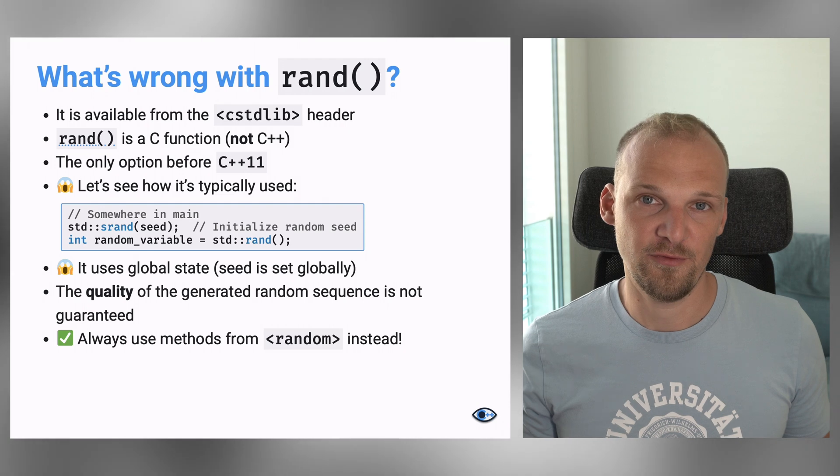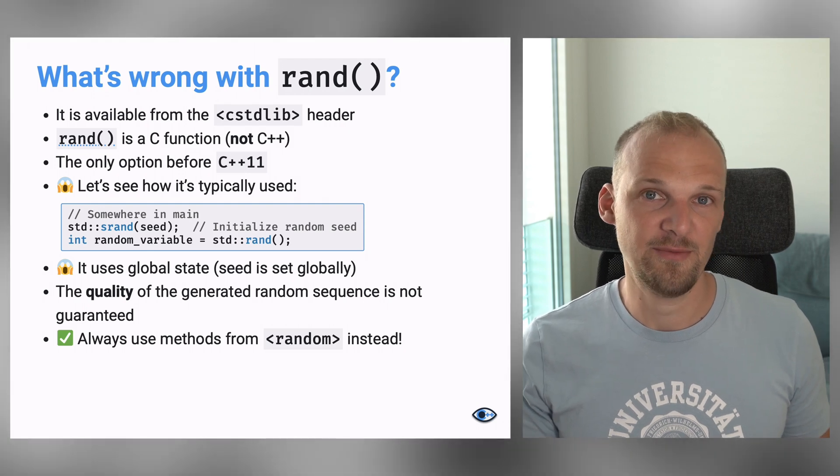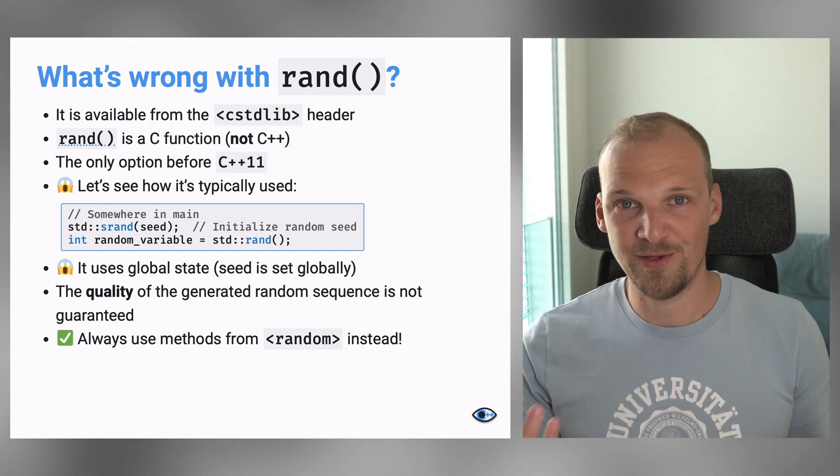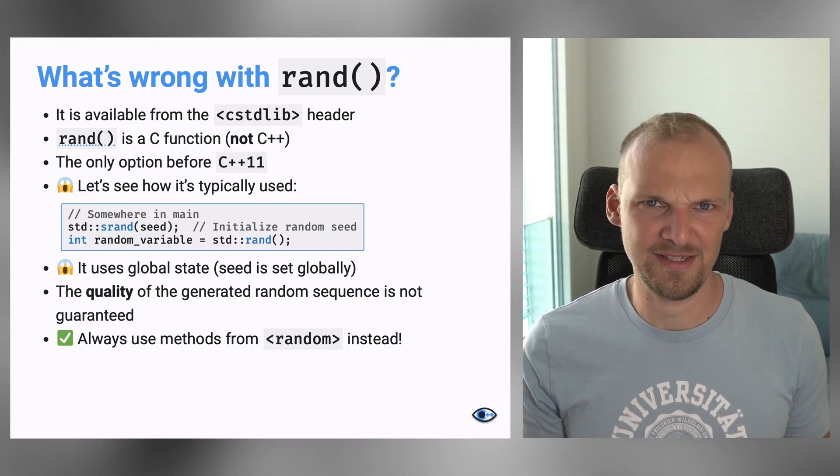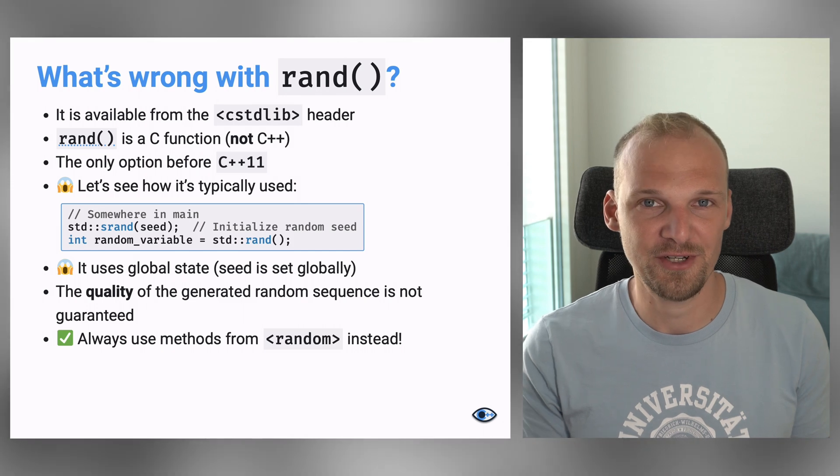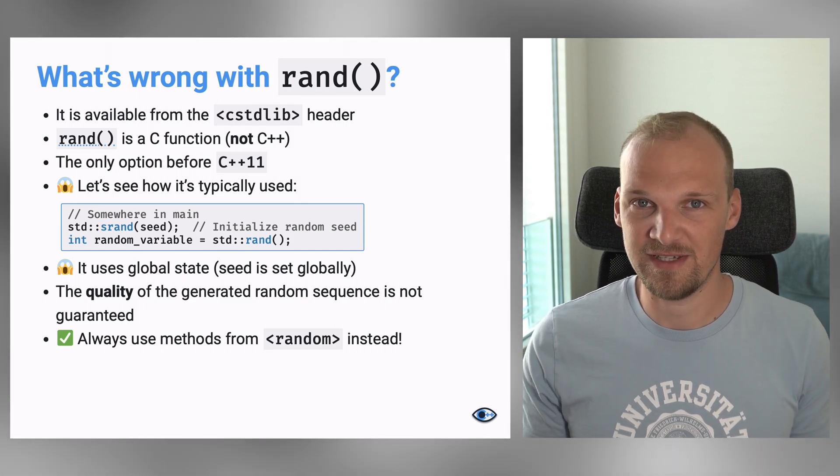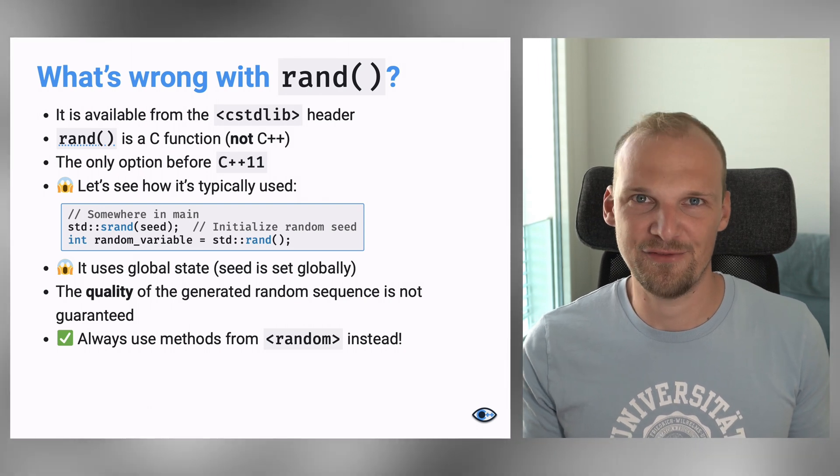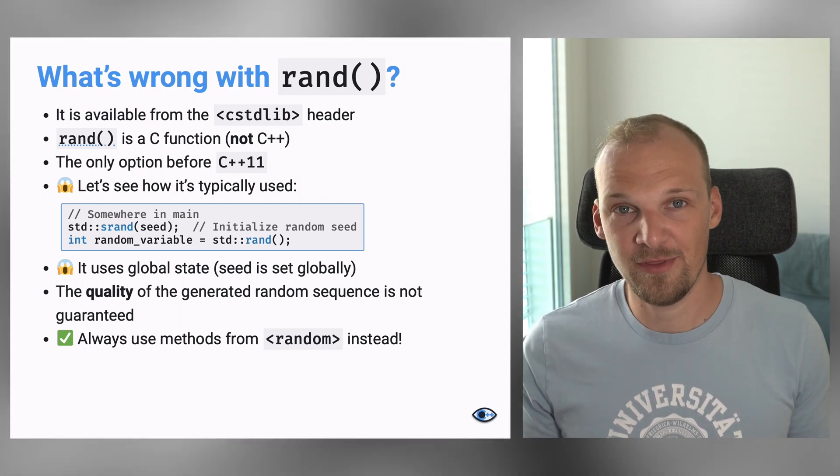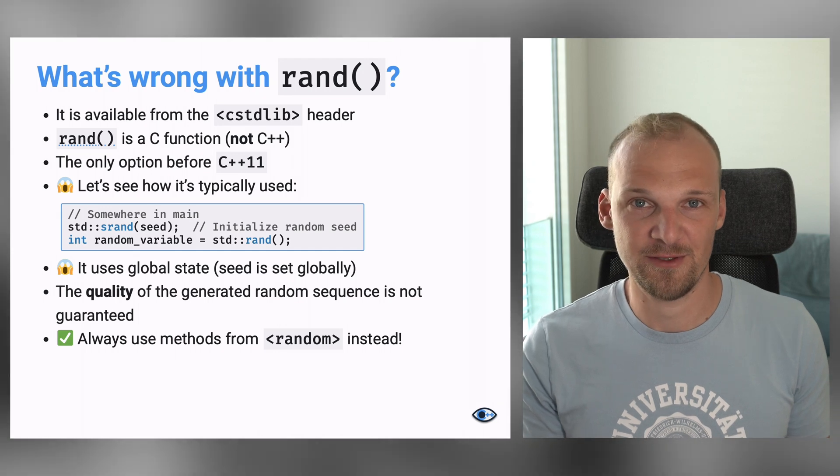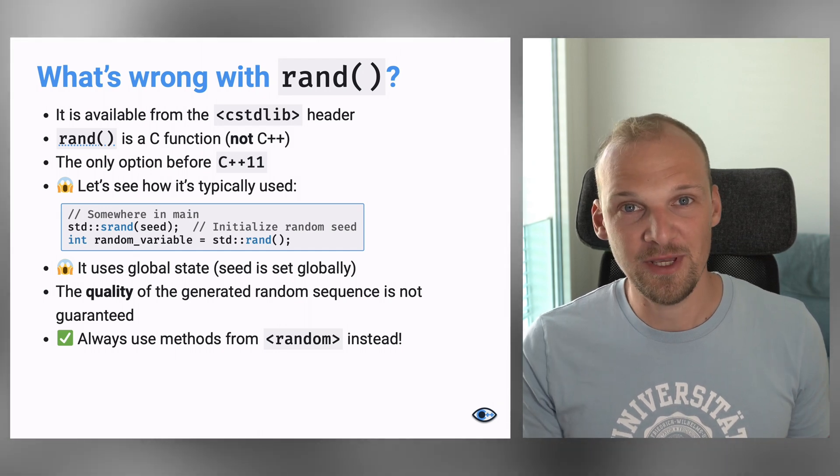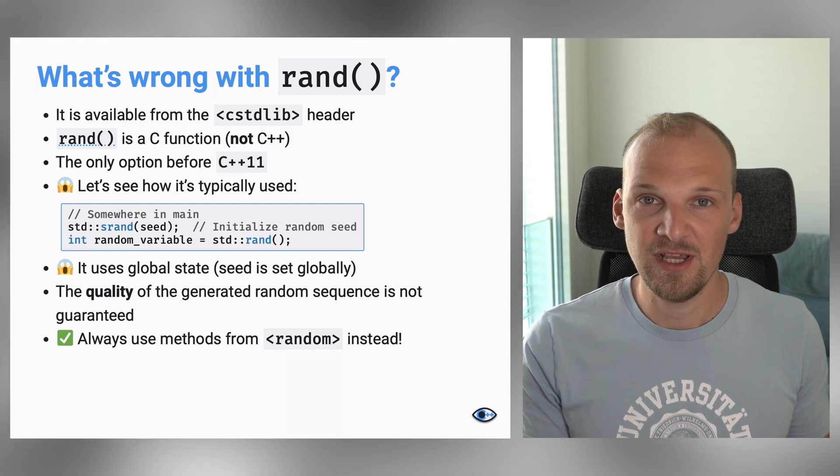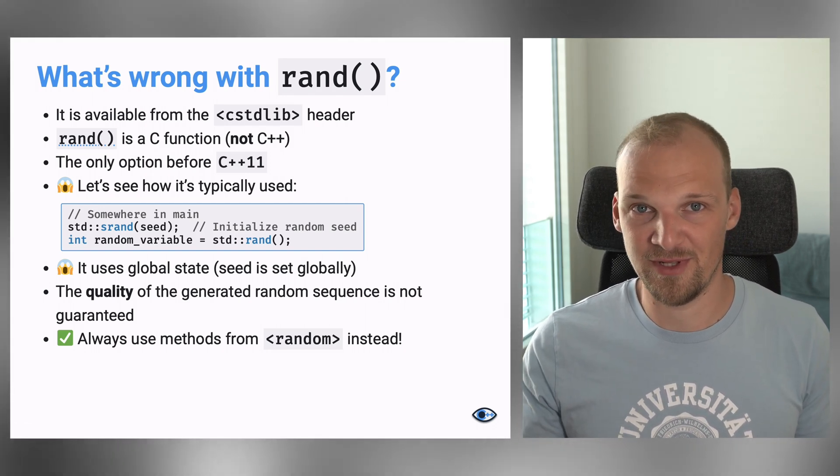The typical use of the rand function looks something like this. So, somewhere in the main function, we initialize our randomness by using the srand function. And we usually pass it some seed. And what people usually use is they use the current time because that is kind of random. And now that we have initialized the randomness with this rand function, we can actually use the rand function to generate our random numbers, which will be just integers from zero to max random number.